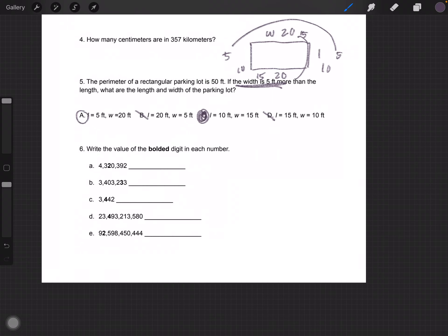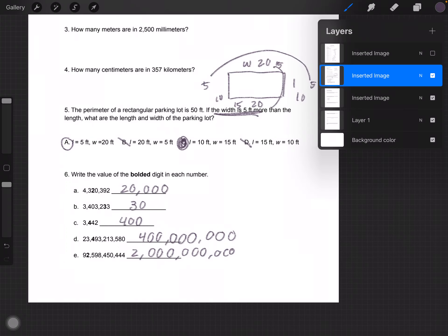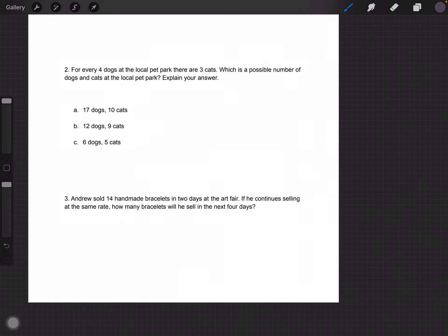Number 6 says, write the value of the bolded digit in each number. This should be pretty easy. This one is 20,000. This one is 30. This one is 400. This one is 400 million. And this one is 2 billion.